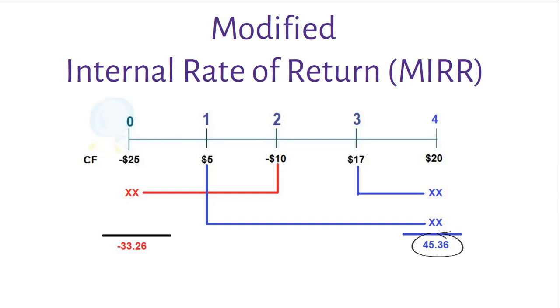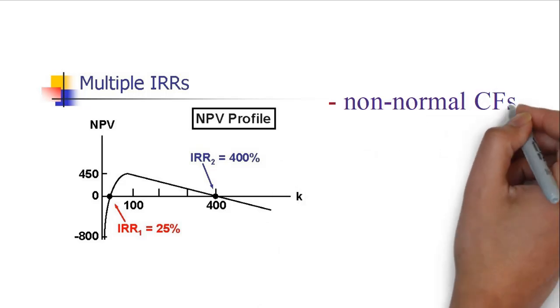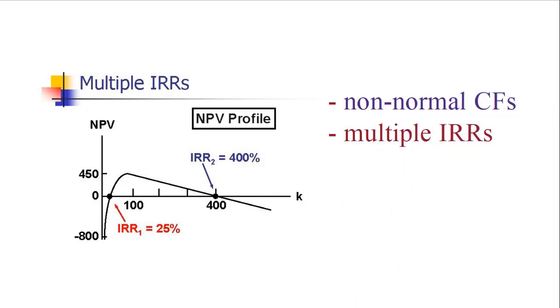Now, why MIRR? Some projects may have non-normal cash flows and thus may have multiple IRRs. In such situations, project selection might be erroneous or misleading.